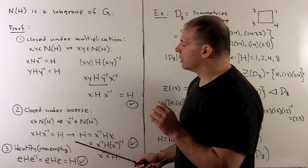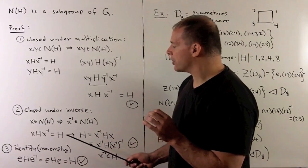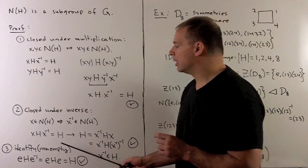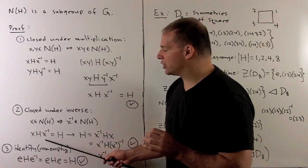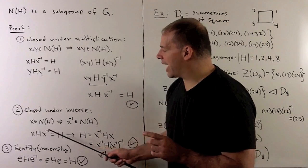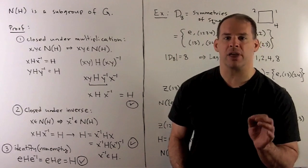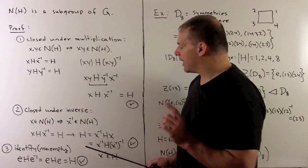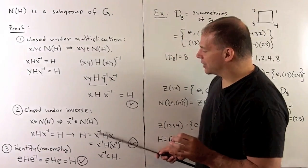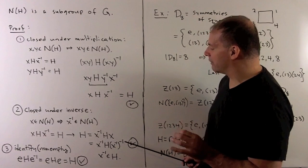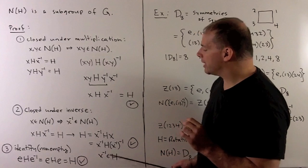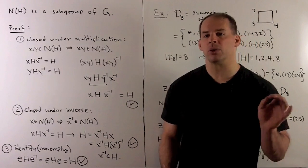For the inverses, we suppose X is in the normalizer and want to show X inverse is also in the normalizer. We have conjugation of H by X gives us H. I'm going to push the X to the other side as X inverse, and the X inverse to the other side as X. That gives us that if we conjugate by X inverse, noting that X inverse inverse equals X, we get H. So X inverse is in H, and we have closed under inversion.